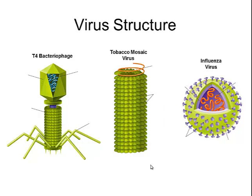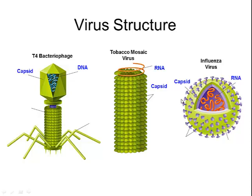In basic terms, all viruses have two parts: a capsid on the outside made of protein, and on the inside one of the two types of nucleic acids. For example, the T4 bacteriophage, which infects bacteria, has DNA on the inside. The tobacco mosaic virus, which infects tobacco plants, is an RNA virus with a cylinder-shaped capsid. Influenza virus, another RNA virus, is circular in shape. Many viruses also have other structures involved in how they attach to and attack the cell.